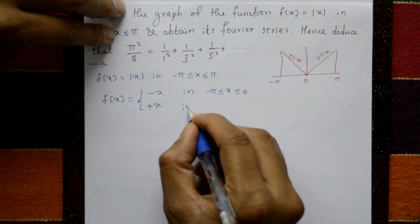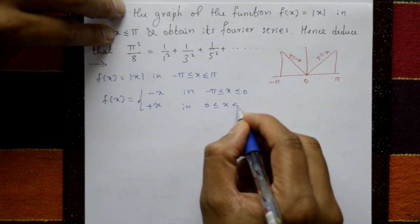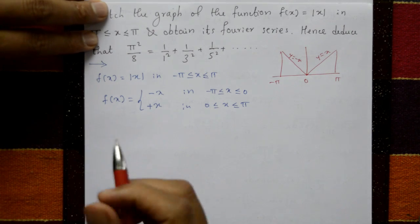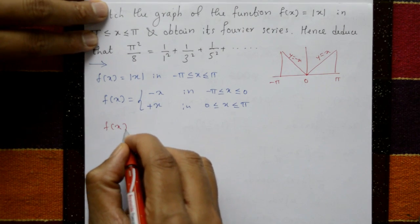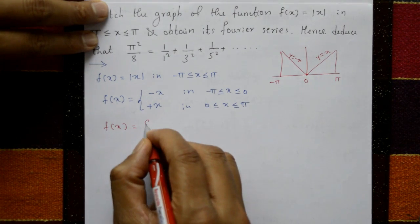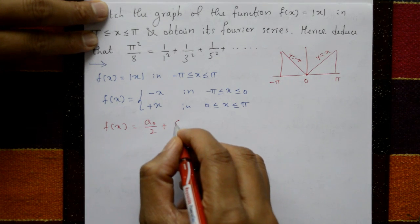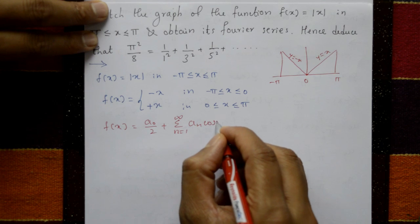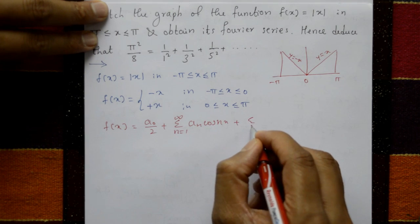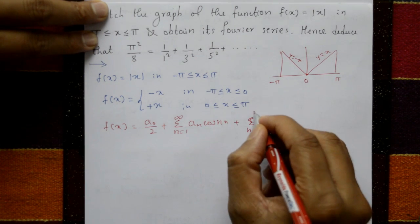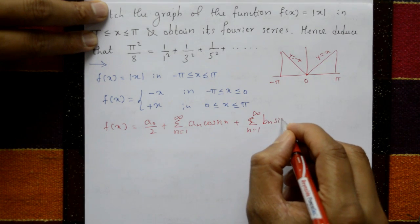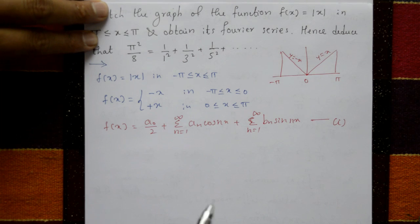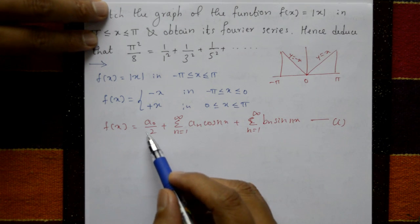The Fourier series is f(x) = a₀/2 + summation n=1 to infinity of aₙ cos(nx) + summation n=1 to infinity of bₙ sin(nx). This is equation number one.